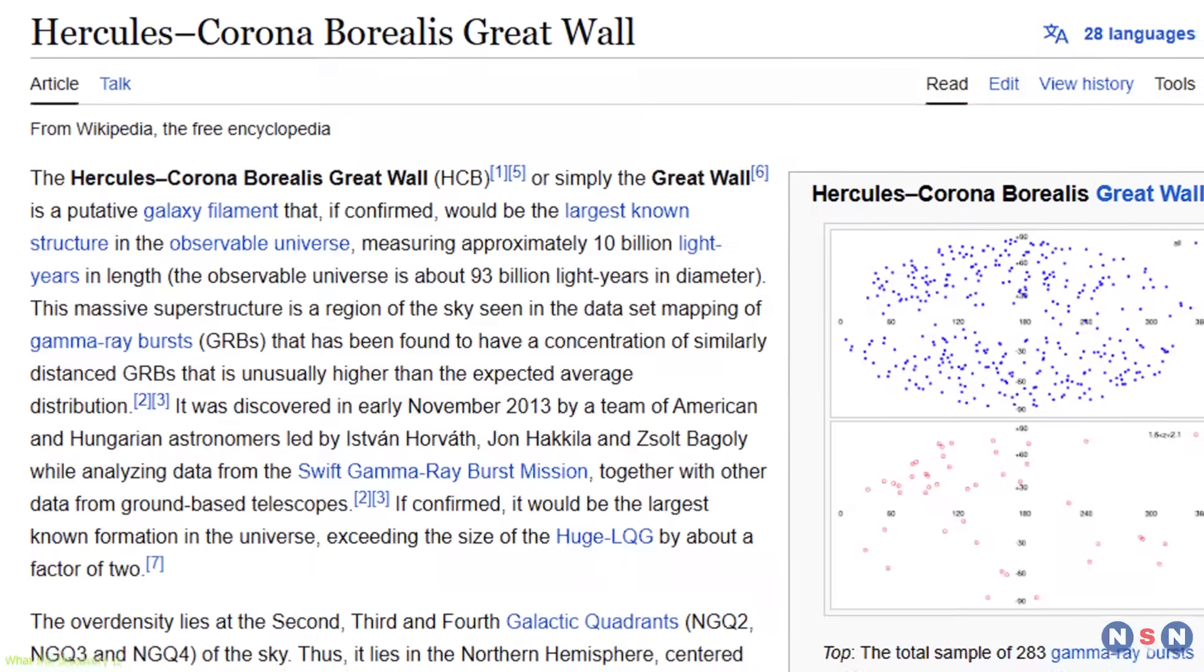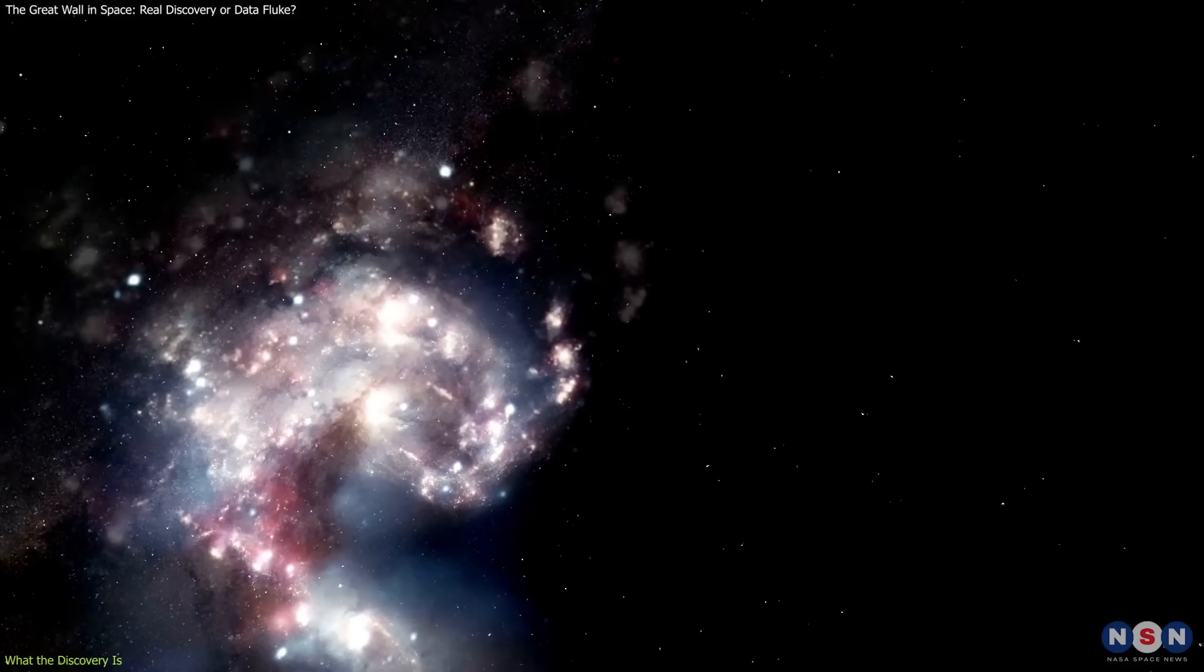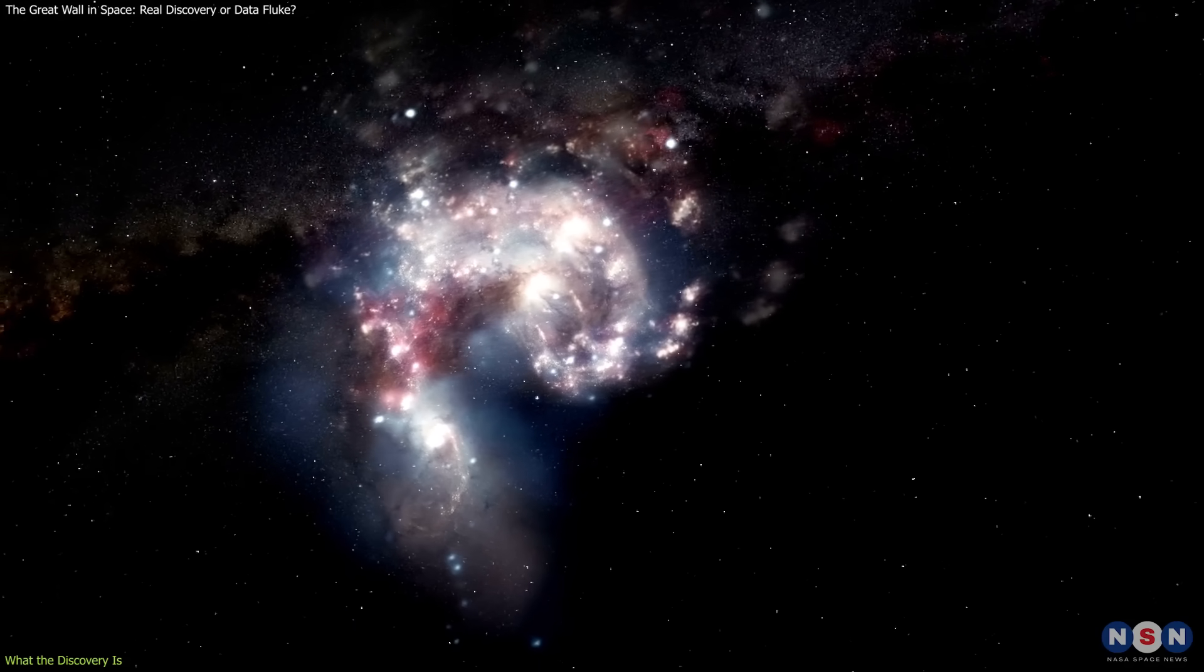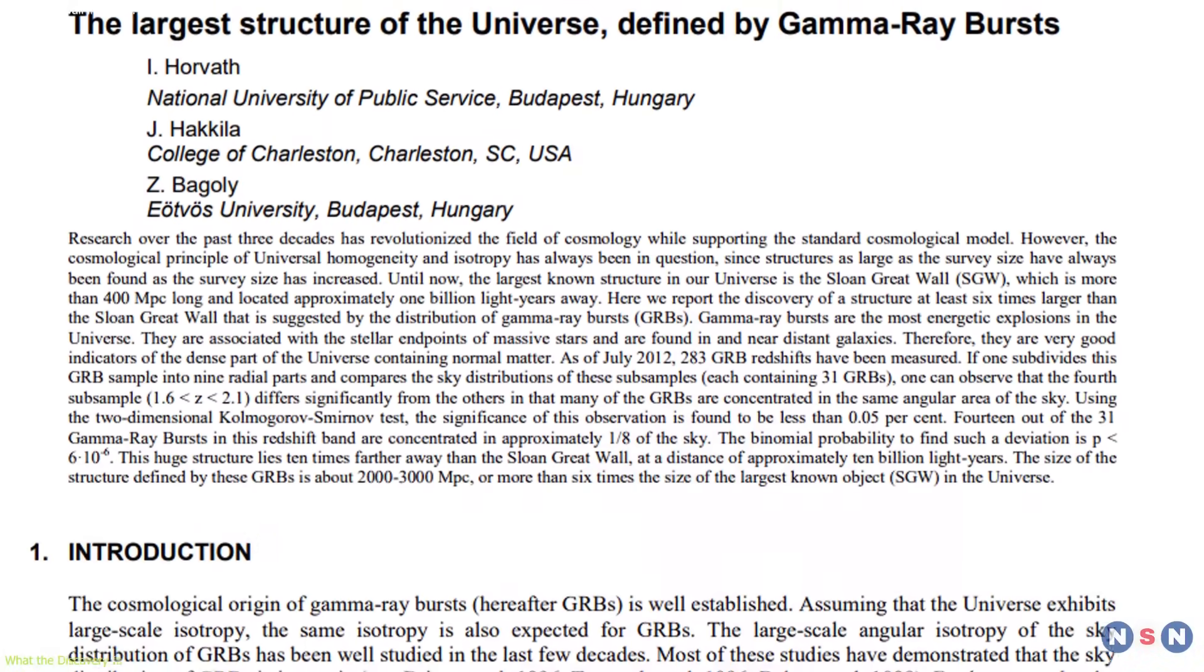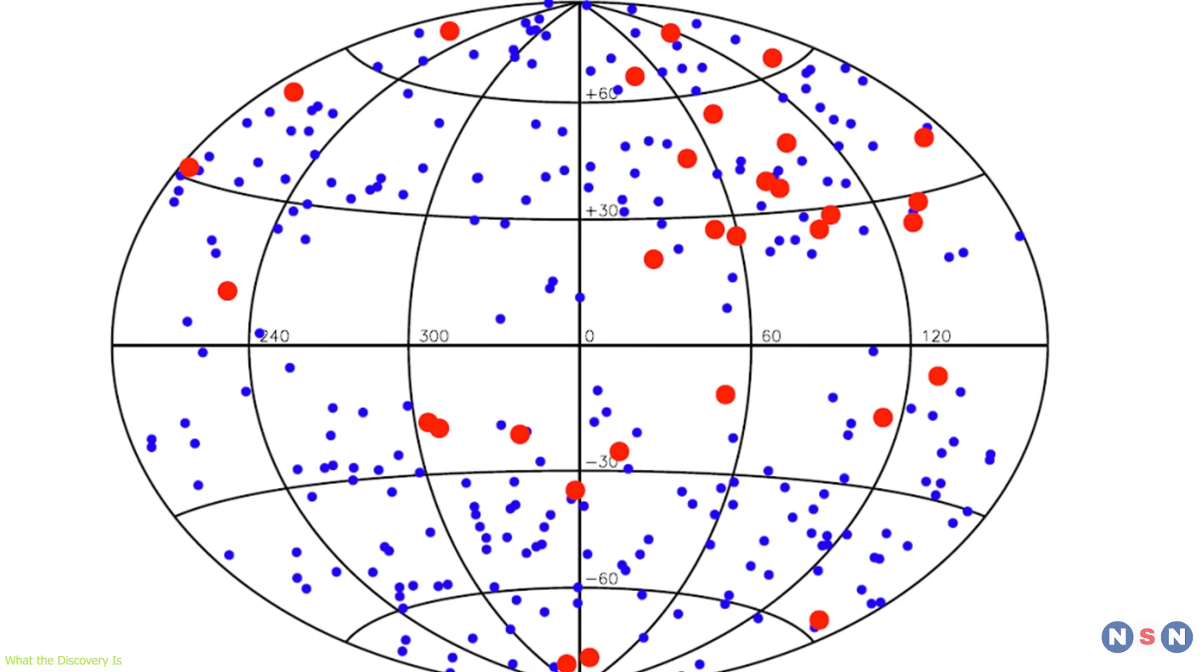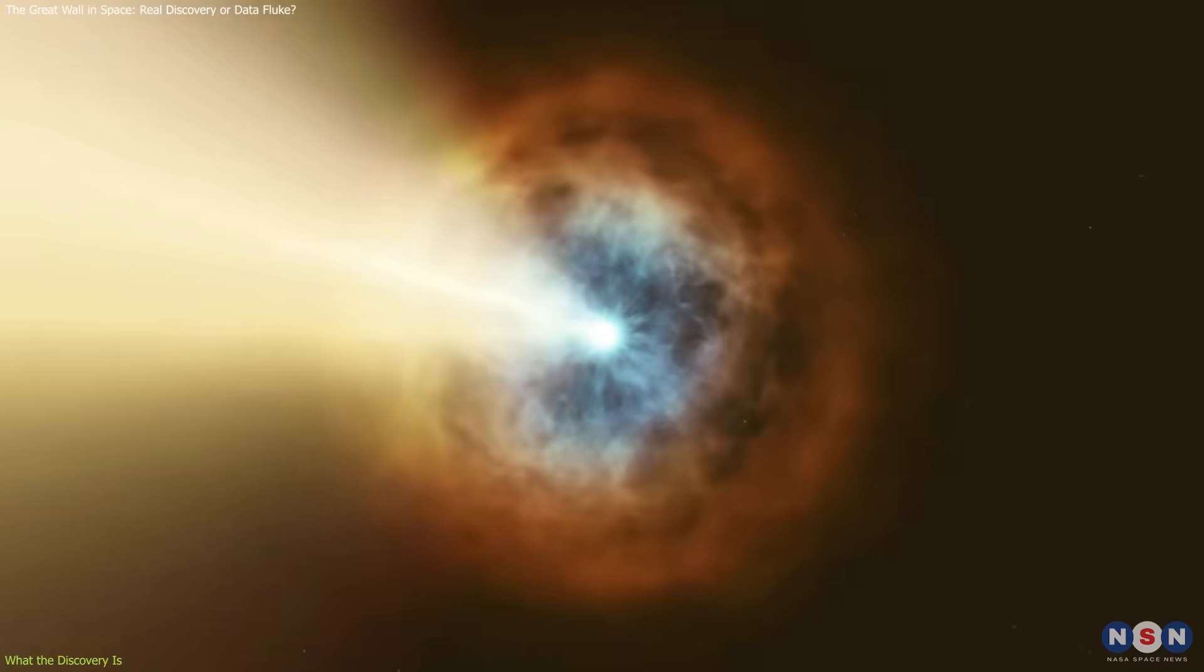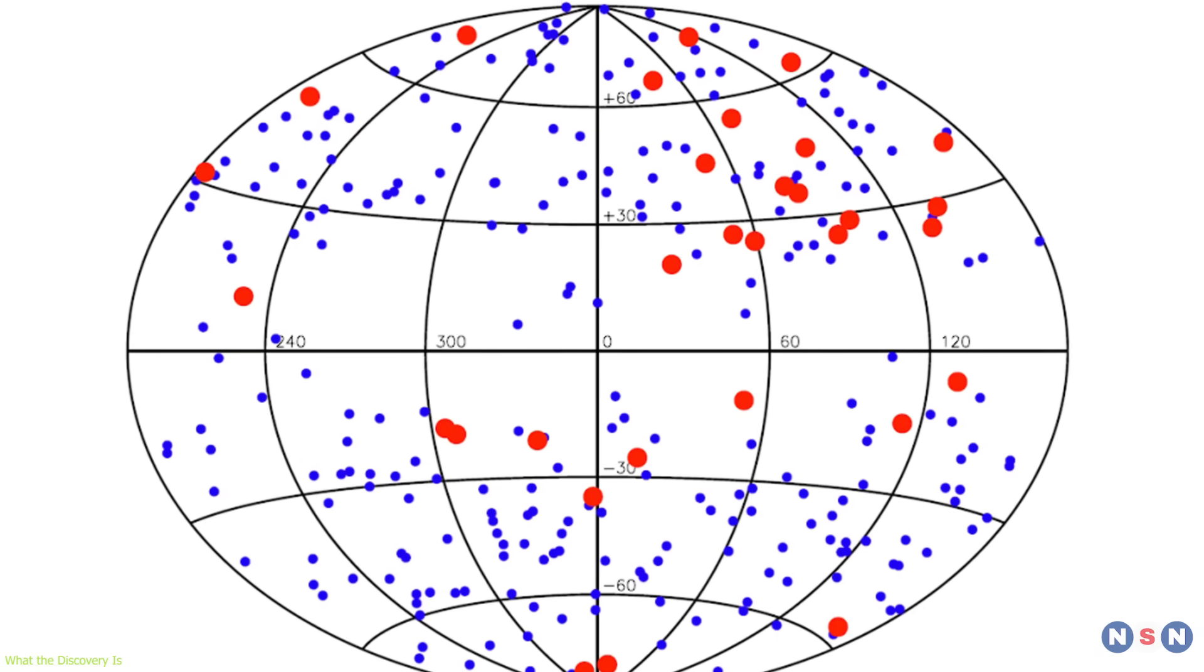The Hercules-Corona Borealis Great Wall isn't a solid structure, but a vast three-dimensional distribution of galaxies and galaxy clusters across a large span of the observable universe. Its existence was first proposed after a 2013 study identified an unusually high concentration of gamma-ray bursts, brief, ultra-energetic events associated with dying stars or neutron star mergers, in a specific region of the sky.